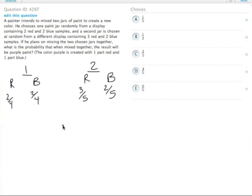And he wants to make some purple paint, so he needs one red and one blue to make this purple paint. However, we don't know whether he gets the red one from number one and the blue from number two, or the blue from number one and the red from number two, so we need to figure out those two different probabilities.